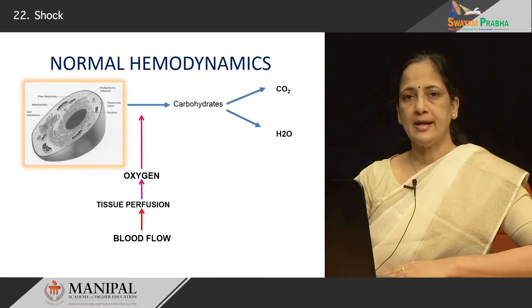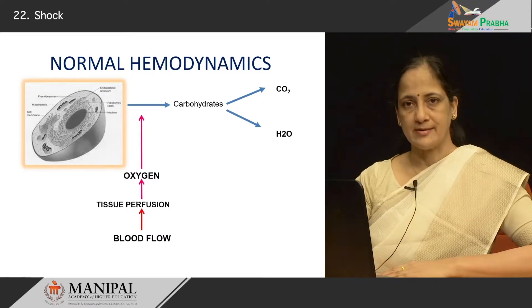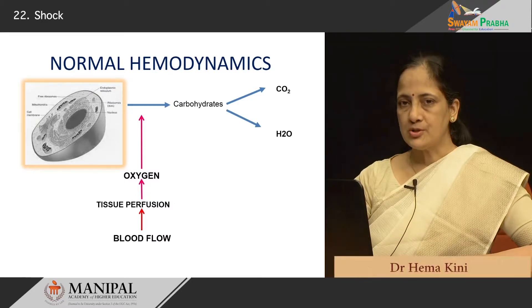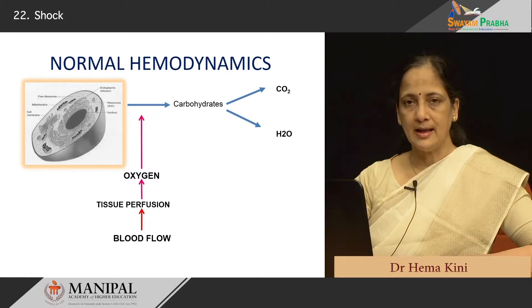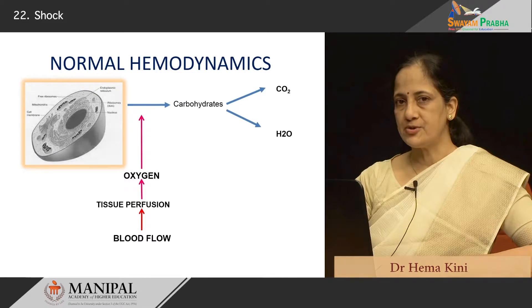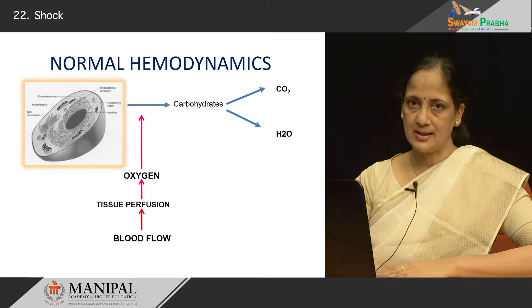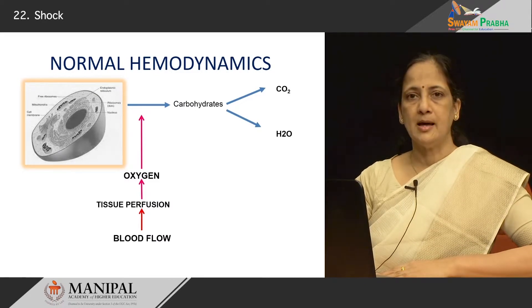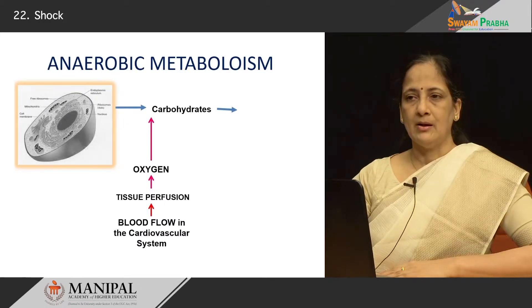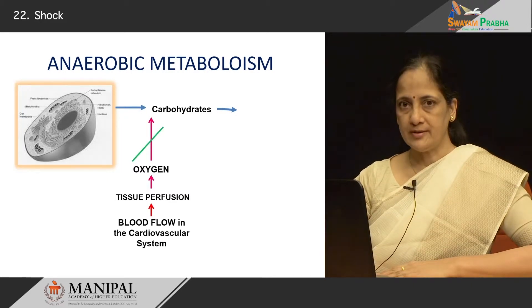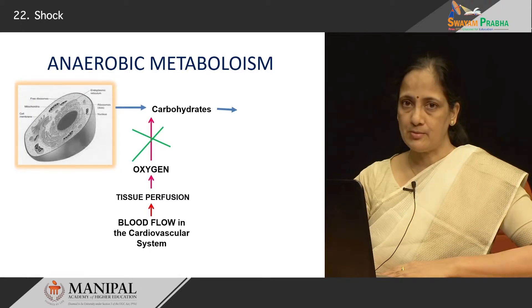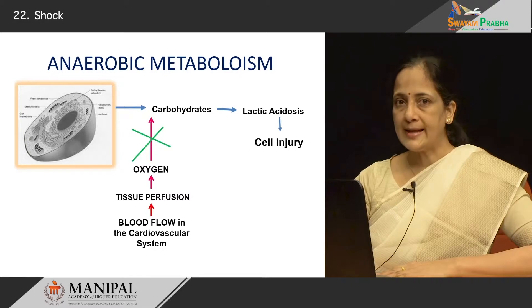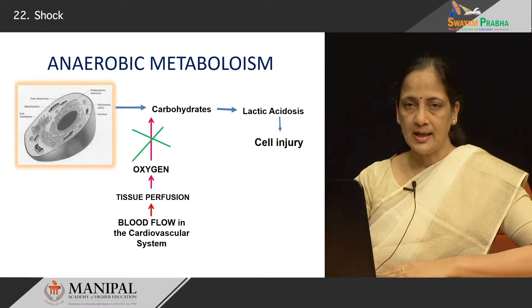For all these metabolic activities at the cellular level, oxygen is required. This oxygen is brought to the cells and tissues by the blood vessels, and this flow of blood supplying oxygen and nutrients to the tissue is referred to as tissue perfusion. This tissue perfusion is determined by the blood flow to a given tissue or organ. If this oxygen supply is not there, the initial aerobic metabolism will transform into anaerobic metabolism wherein carbohydrates are converted to lactic acid. This results in acidosis with a drop in pH at the cellular level, and cell injury results.